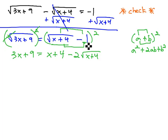And then we'll square the last term, negative 1 squared is positive 1. We can combine like terms to clean it up a little bit. 3x plus 9 equals x plus 4 and 1 is 5, minus 2 square root of x plus 4.